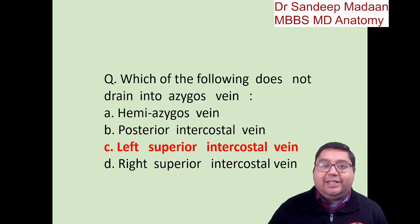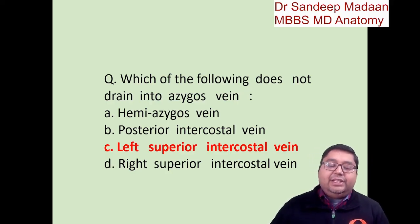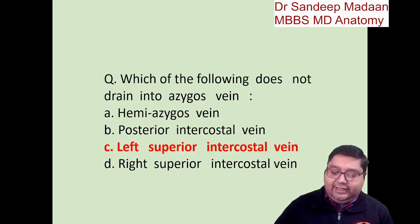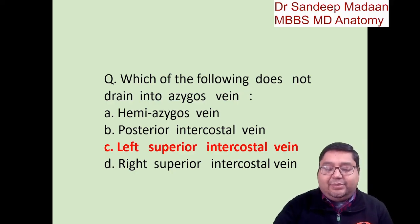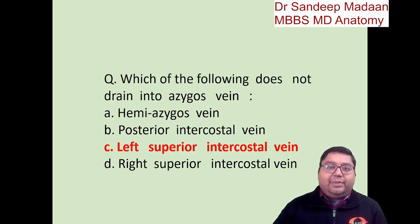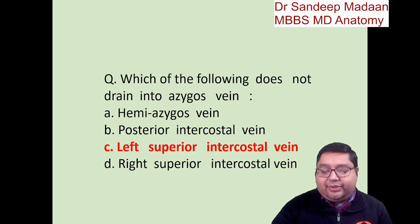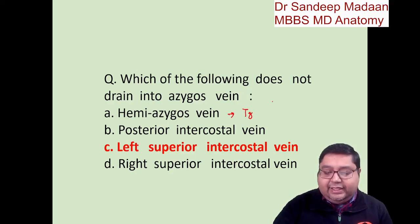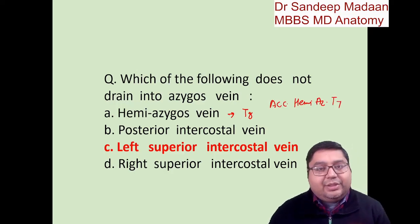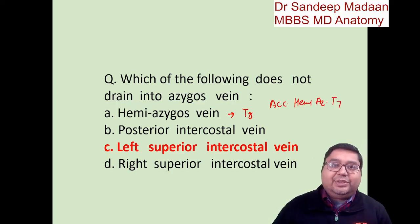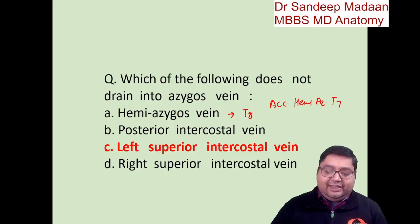One more thing to add to our notes: when the accessory hemi-azygous and hemi-azygous cross the midline, at what level do they cross? The hemi-azygous crosses at the level of T8, and the accessory hemi-azygous crosses at the level of T7. Thank you so much — looking forward to meeting you on the next day of the series. Till then, take care, bye.